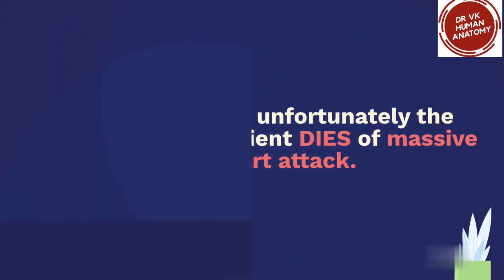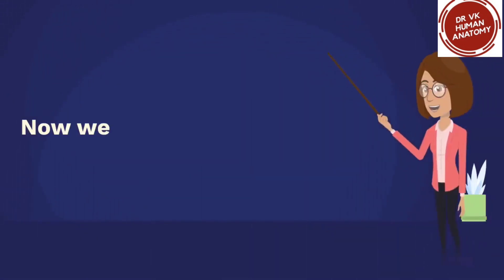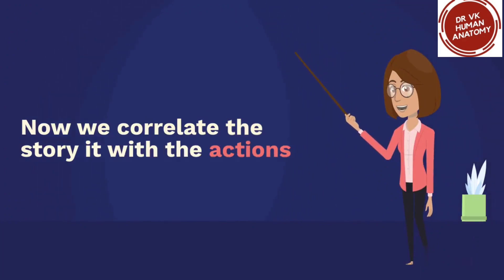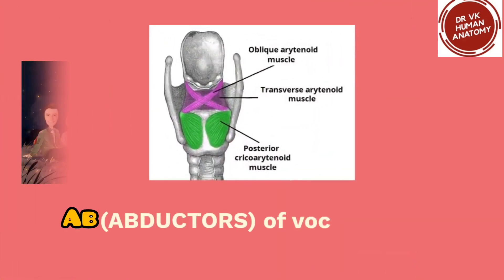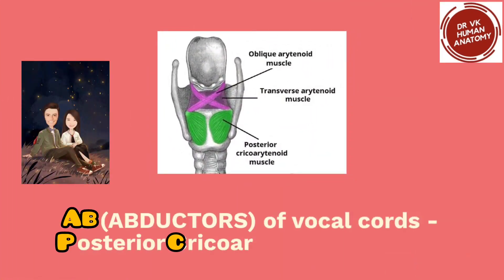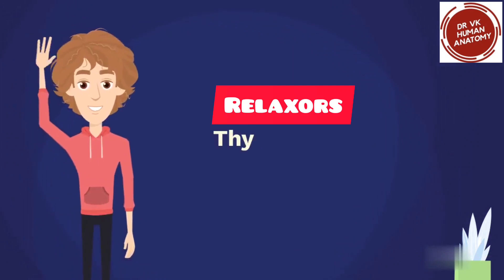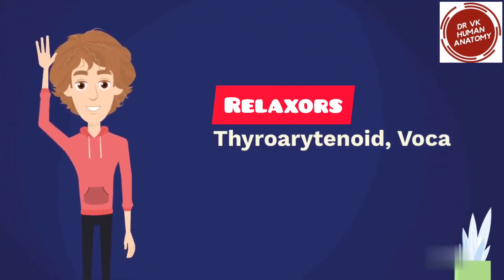Now we correlate the story with the actions. 'Ab' — Abductors of vocal cords: posterior cricoarytenoid only. Relaxers: thyroarytenoid and vocalis — represented by 'TV' (TV they were watching).